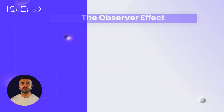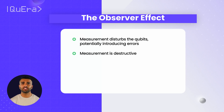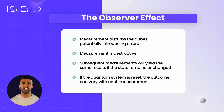The process of measurement is inherently imperfect due to the observer effect, where the act of measuring can disturb the qubits, potentially introducing errors. Additionally, measurement is fundamentally destructive — it extracts classical information by irreversibly altering the quantum state. Once a quantum state is measured, subsequent measurements will yield the same result as long as the state remains unchanged. However, if the quantum system is reset or interacts with the environment, the outcome can vary with each measurement.